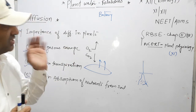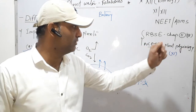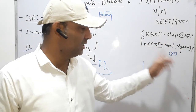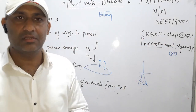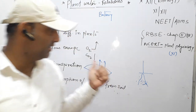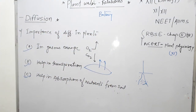So this is the first topic related to RBSC chapter 5th for class 12th and NCIT Plant Physiology for class 11th. You can take a screenshot of this diagram.